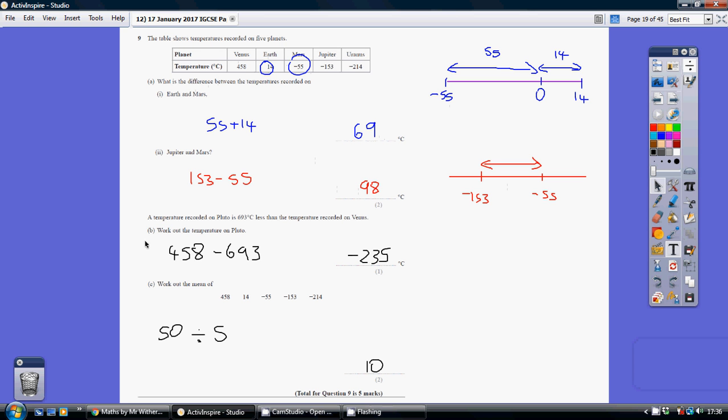Now part B is different. We're no longer talking about a difference. We're talking about a specific temperature. So then you do have to make it clear whether it's a positive or a minus. Now we're looking for the temperature on Pluto, which is 693 less than Venus. So take Venus's temperature of 458, take away 693, and we get minus 235. You must put that minus in.